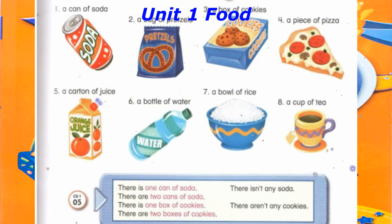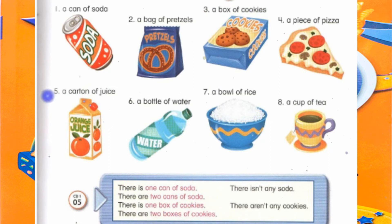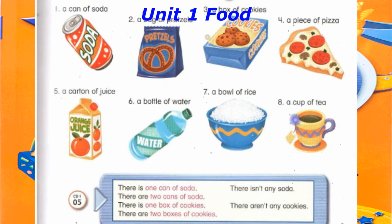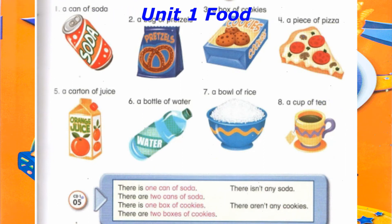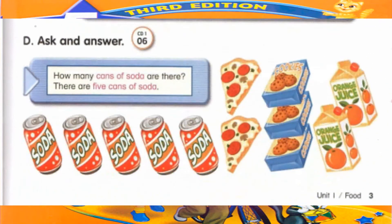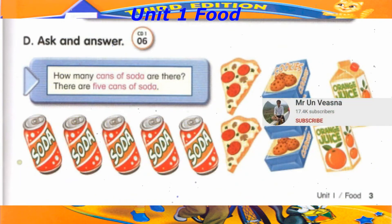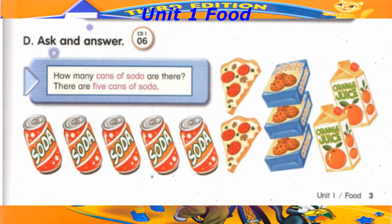Track 5. C. Practice the words and sentences. There is one can of soda. There are two cans of soda. There isn't any soda. There is one box of cookies. There are two boxes of cookies. There aren't any cookies. How many cans of soda are there? There are five cans of soda.